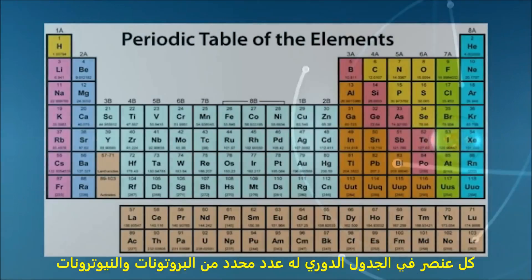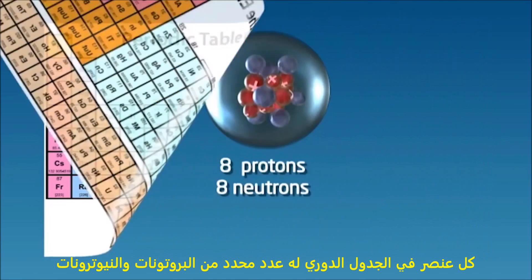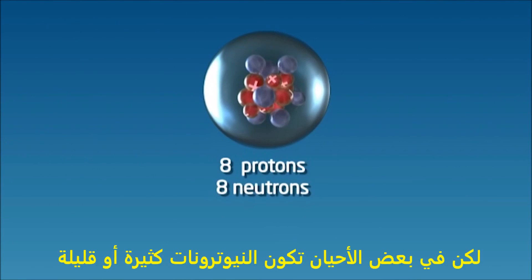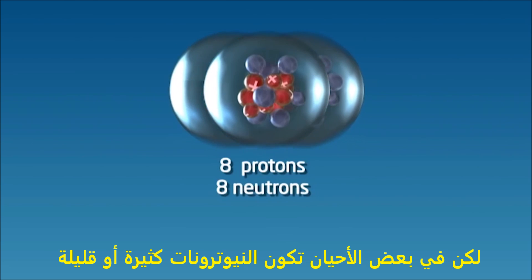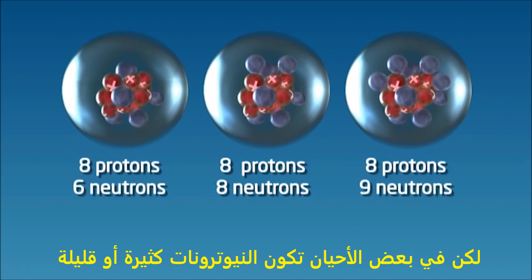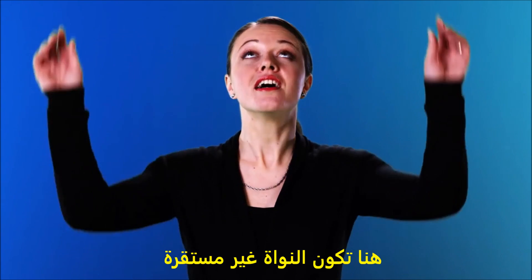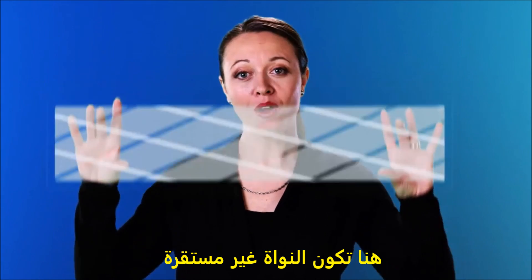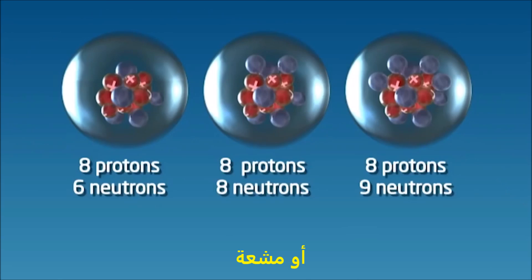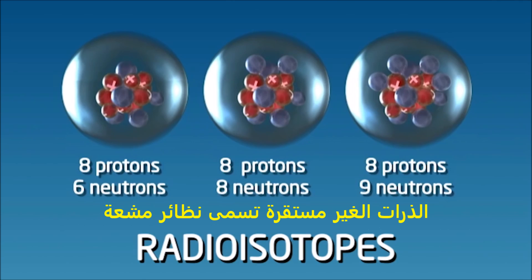Every element in the periodic table has a specific number of protons and neutrons. But sometimes an atom will have too many or too few neutrons. When this happens, it becomes unstable, or radioactive. An unstable atom is called a radioisotope.